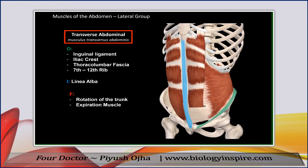Notice that the rectus abdominis runs through the transverse abdominal muscle. That means the upper part of the transverse abdominis lies behind the rectus muscle, and its lower part lies in front of the rectus abdominis.